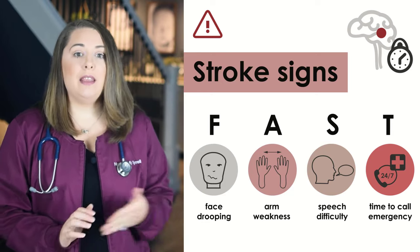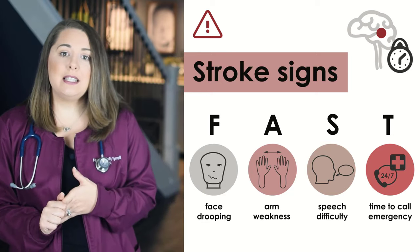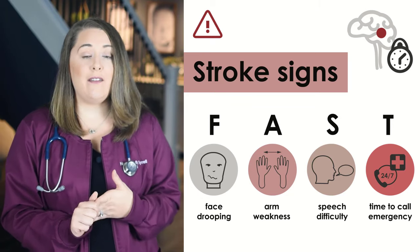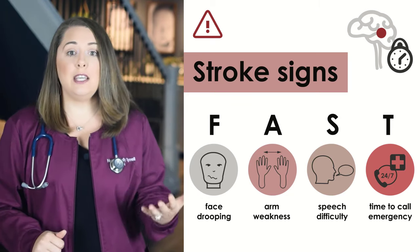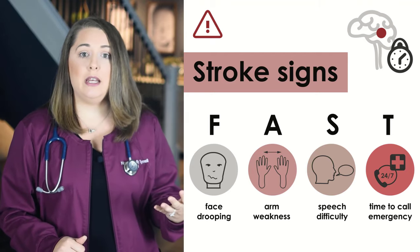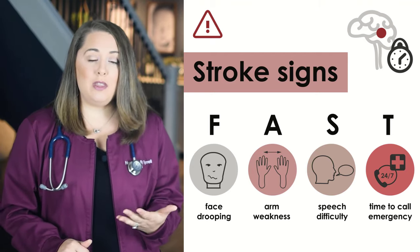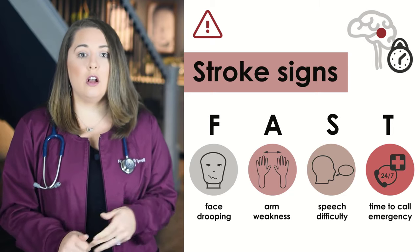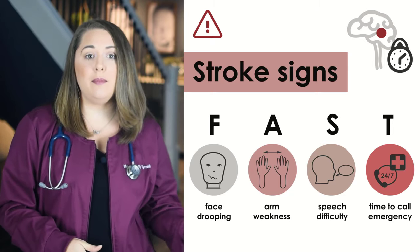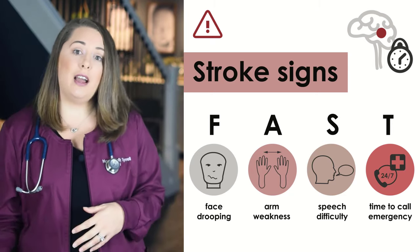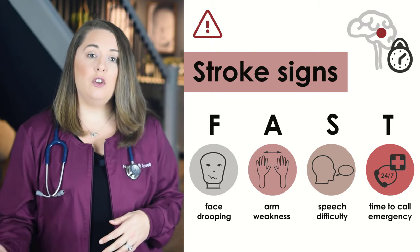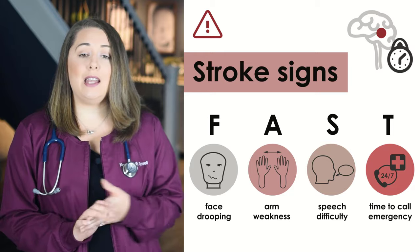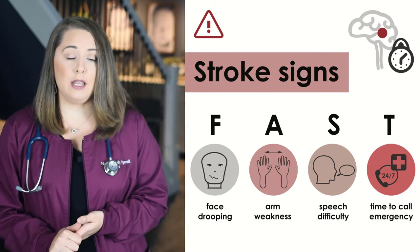T is for time — timing is everything. There is a very high-risk medication you can give to patients having an ischemic stroke called TPA, but it must be given within the first three hours after the onset of symptoms. The longer the patient waits to receive treatment, the higher the chance of irreversible neurological deficits. So acute stroke patients are going to be at the very top of your priority list.